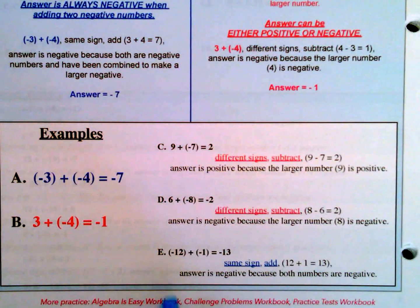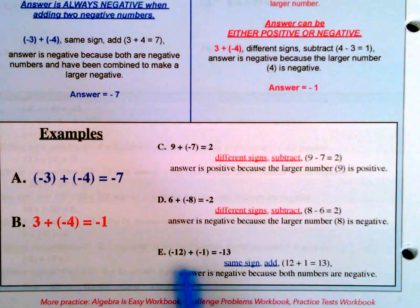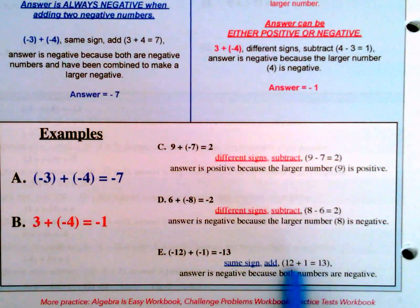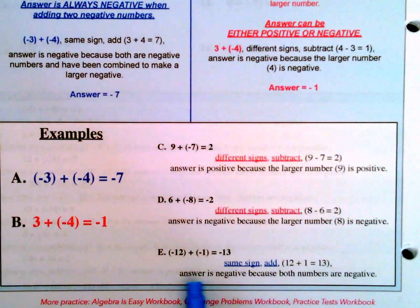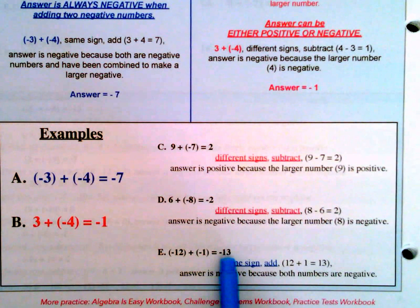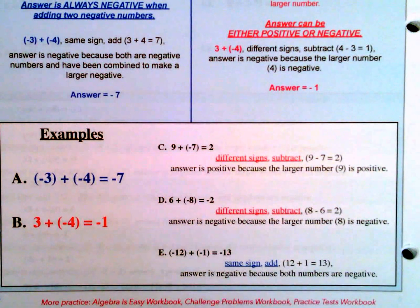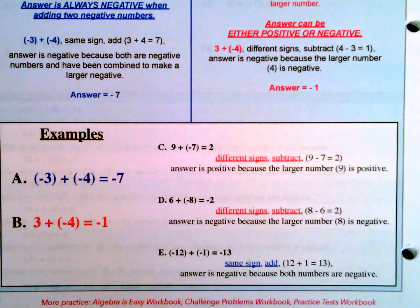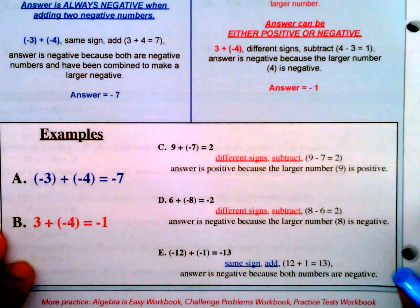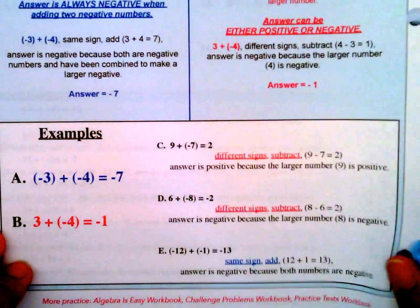Example E: negative 12 plus negative 1. These are the same sign, so we add. 12 plus 1 is 13, and the answer is negative because both numbers are negative. Two negative numbers come together to make a larger negative: negative 13. Now let's look at the practice problems on page 5.